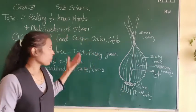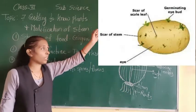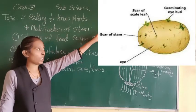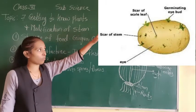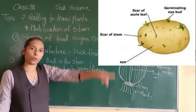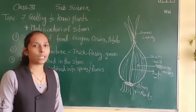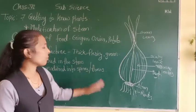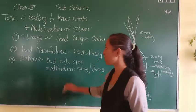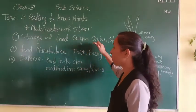Potatoes also have buds on them, which we call eyes. That is the reason the potato is also one type of underground stem. So this is the first modification of the stem - storage of food.